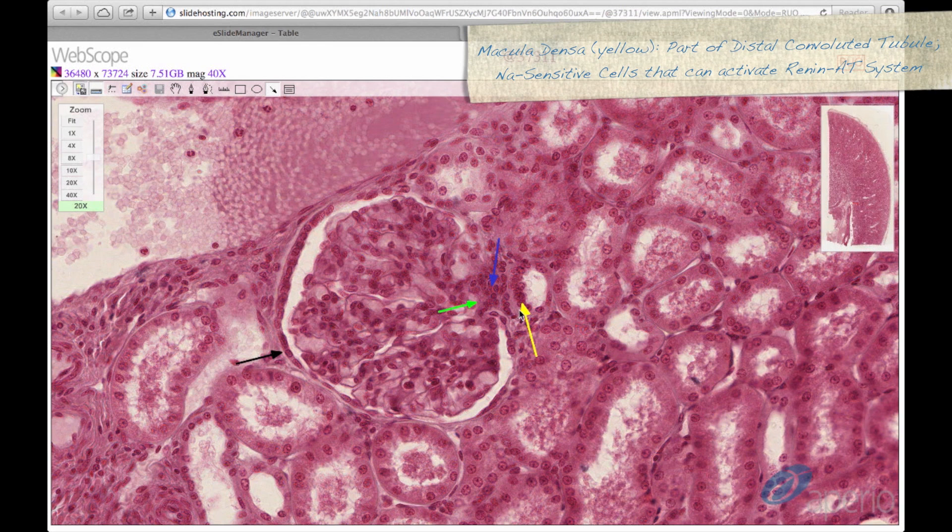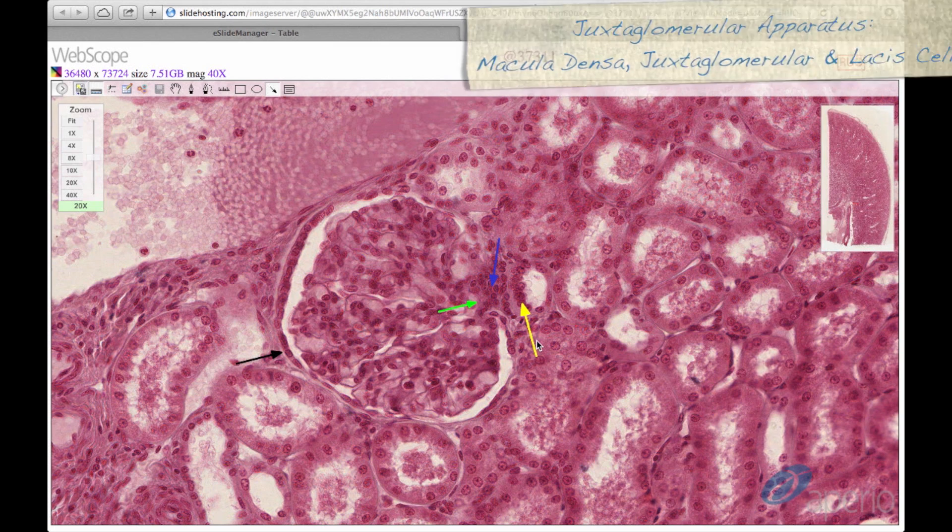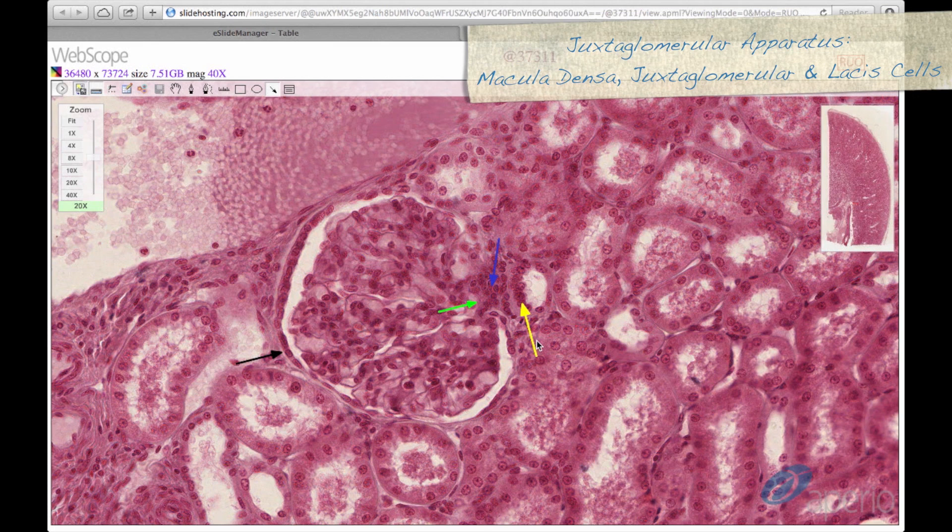Macula densa cells are seen here at the yellow arrow. They are a thickened portion of the distal convoluted tubule. This acts as a sodium concentration sensor, which can activate the renin-angiotensin system if needed. Macula densa cells, juxtaglomerular cells, and lacis cells, which we will discuss later, make up the juxtaglomerular apparatus.